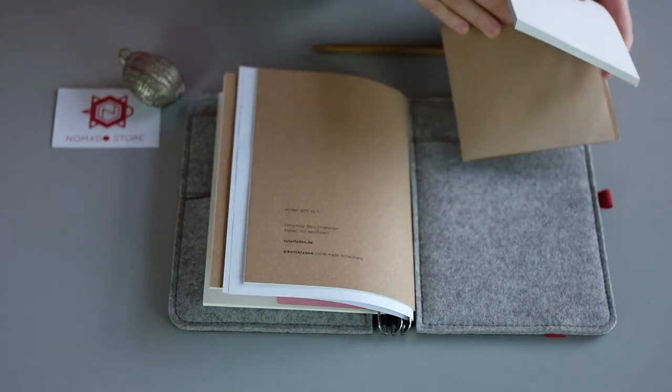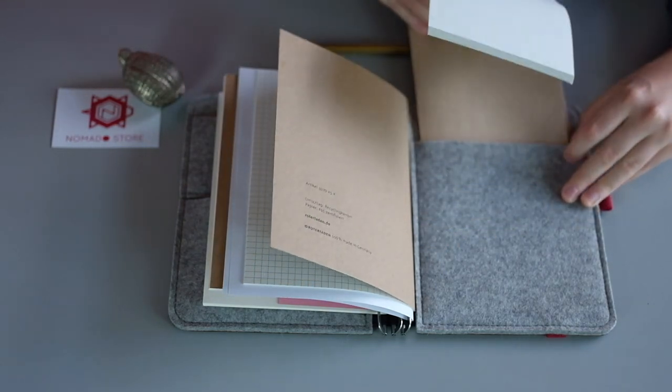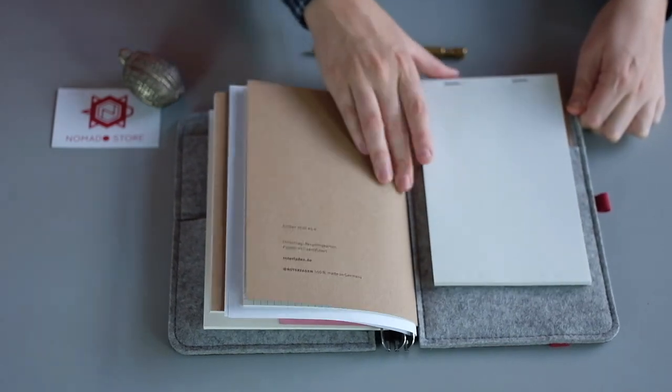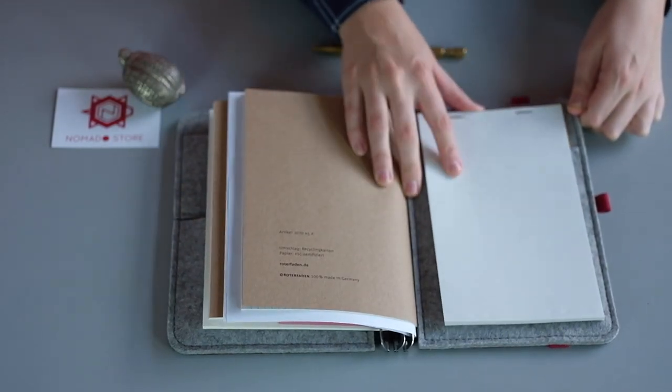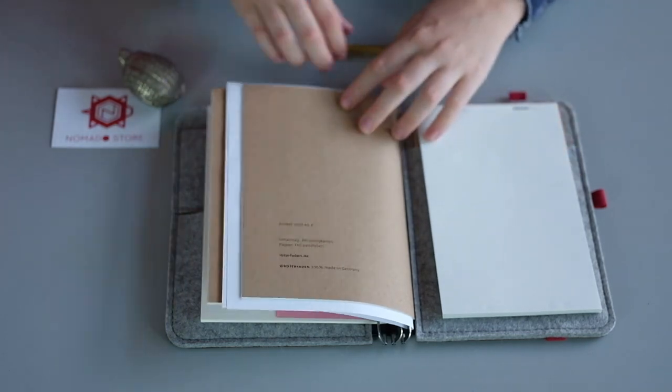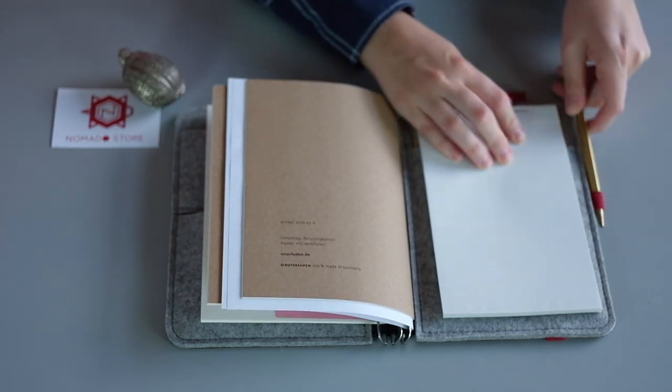Right hand side, you've got an iPad mini sized pocket, which I personally use with the super cool notepad by Rotofurden, which is slightly smaller than the A5 refills and really practical. It just slips in there and you're good to go.